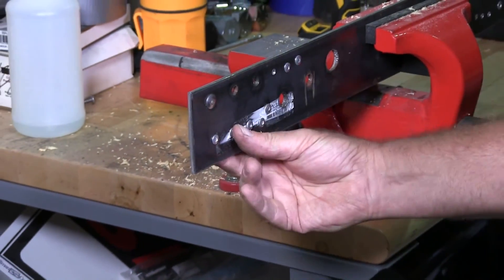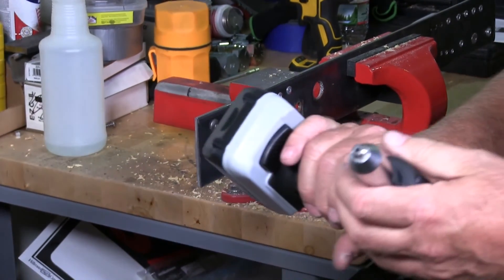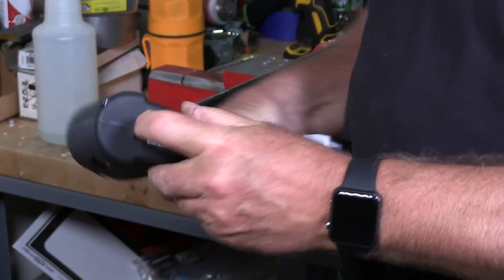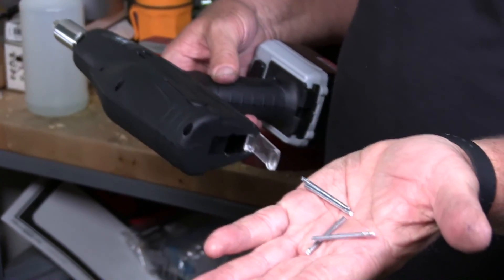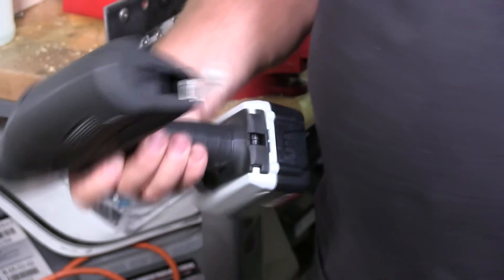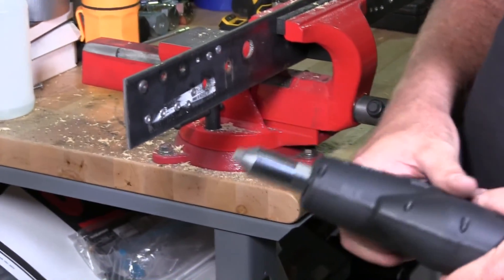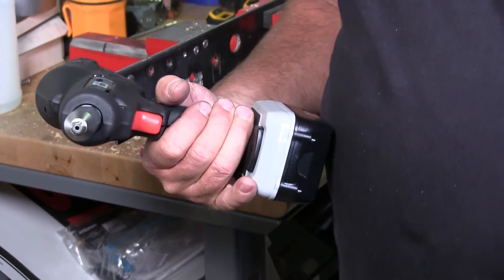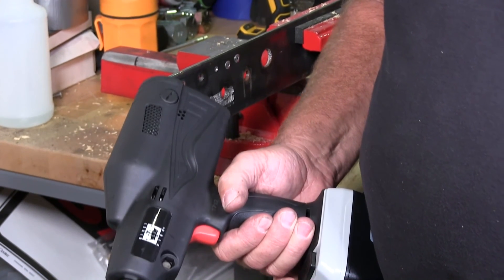It does a nice job at riveting. It's very tight. It's clean. And as you can see, the mandrels all popped out of the back. Very nice unit. It's a must-have if you do rivets on a regular basis. It's a nice tool. Thanks for watching.